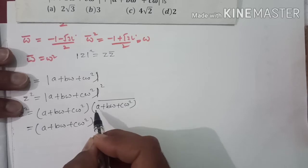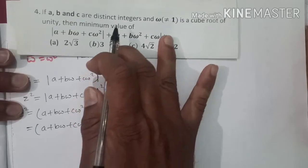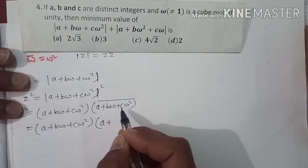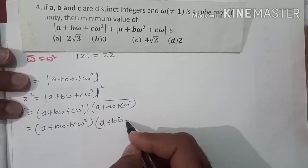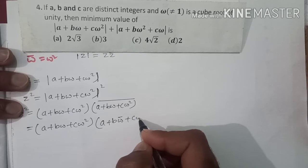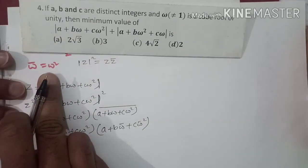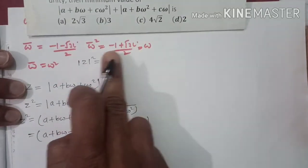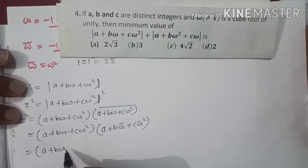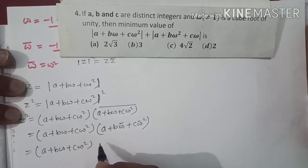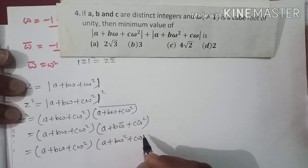اب اس کو solve کریں: a + bω + cω² کا bar نکالتے ہیں۔ a خود ایک integer ہے تو a bar بھی a ہی ہوتا ہے، b اور c کے لیے بھی یہی بات ہے۔ تو bar صرف omega کے لیے لگے گا: a + b·omega bar + c·omega bar²۔ چونکہ omega bar = ω² اور omega bar² = ω، تو یہ ہو جائے گا: (a + bω + cω²)(a + bω² + cω)۔